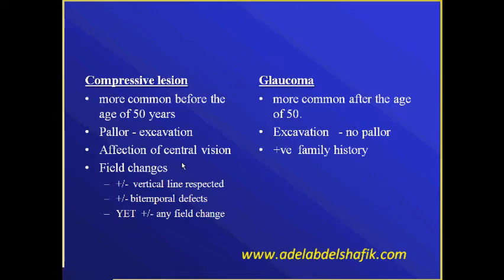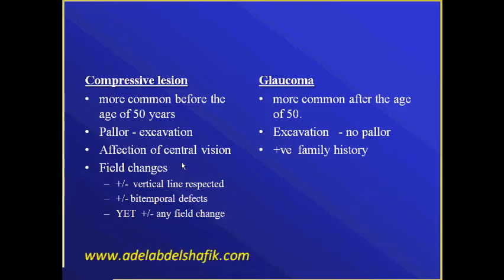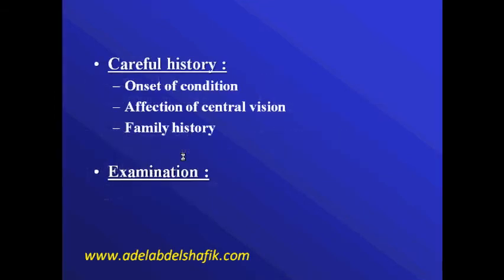Sometimes you get a respect of the vertical line, sometimes you get a bi-temporal defect, but sometimes the field changes may take any shape. On the other hand, glaucoma changes are usually above the age of 50. There is excavation with no pallor of the remaining neural rim, and there is positive family history.